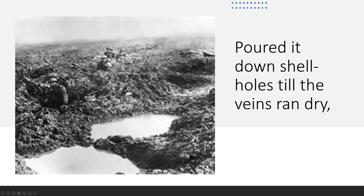Notice again the active diction — 'poured it down shell holes' — seeming to put the responsibility of losing all that blood on Owen's own choices. It's because of himself that he ended up losing so much blood, placing the onus of responsibility on him. He lost so much blood till the veins ran dry. We can see the extent of the blood loss and the graphic suffering he received because of his decision to join the war.